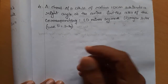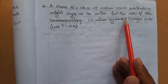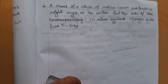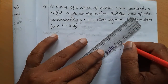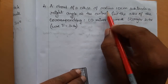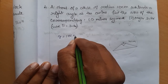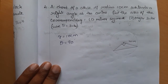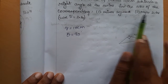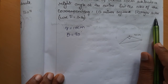Problem 3: A chord of a circle of radius 10 cm subtends a right angle at the center. Let me draw the figure — here is the circle with a chord that subtends a right angle (90 degrees) at the center. Given: radius = 10 cm, theta = 90 degrees. We need to find the area of the corresponding minor segment and the major sector.